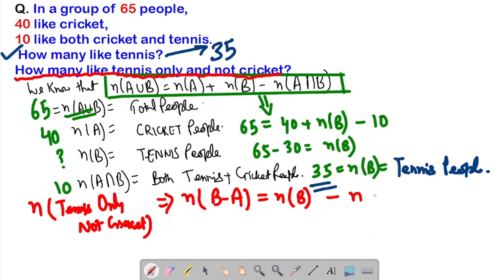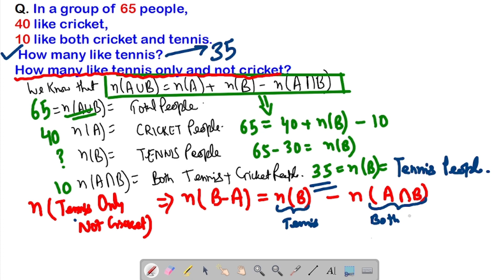n(B - A) = n(B) - n(A∩B), where n(B) is the total number of people playing tennis, that is 35, and n(A∩B) is the people who play both tennis and cricket. That count is 10, as given in the question.